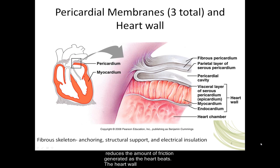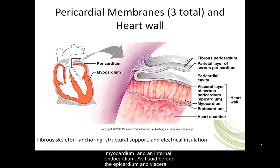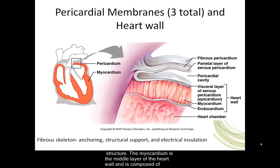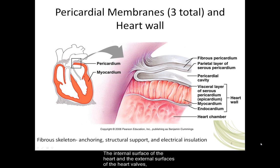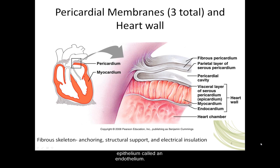The heart wall consists of three distinctive layers: an external epicardium, a middle myocardium, and an internal endocardium. The epicardium and visceral layer of the serous pericardium are synonyms — they are the same structure. The myocardium is the middle layer of the heart wall and is composed of cardiac muscle tissue, and it is the thickest of the three heart layers. The internal surface of the heart and the external surfaces of the heart valves are covered by endocardium, which is composed of a simple squamous epithelium called an endothelium.